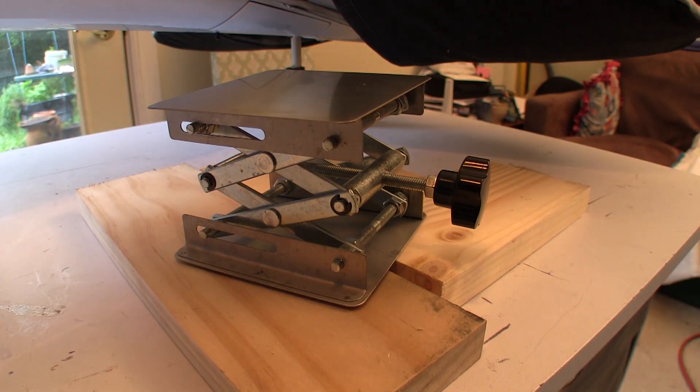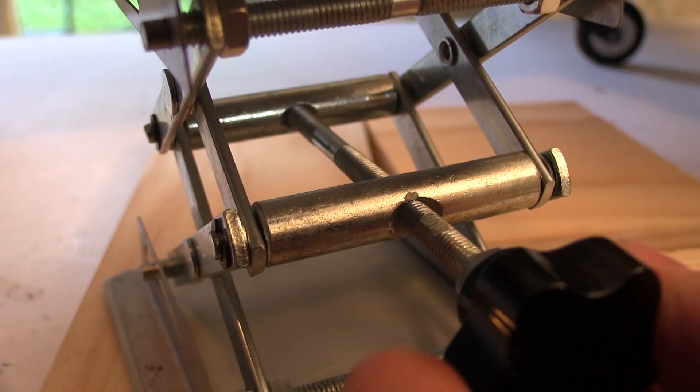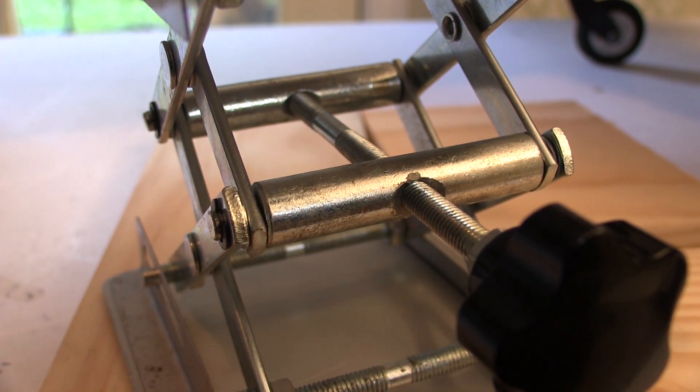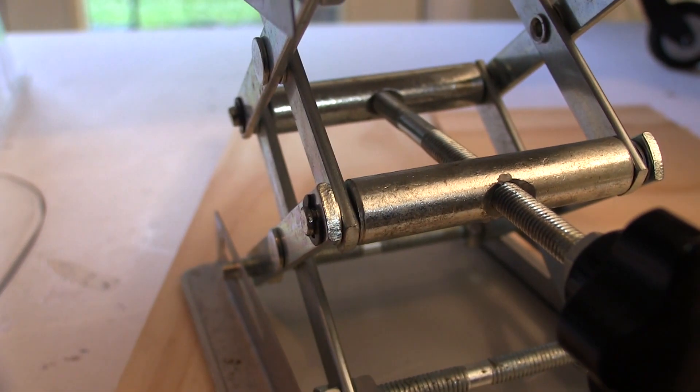working height range of one and three quarter inches when fully collapsed to six and an eighth inch when fully scissored up. The number of threads on the shaft gives us good control over height. The bars that make up...